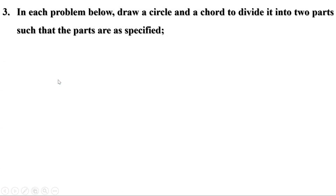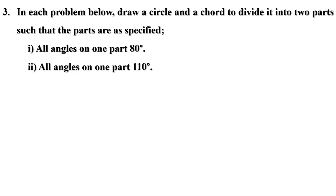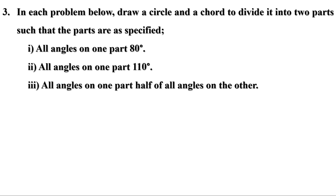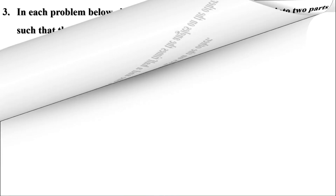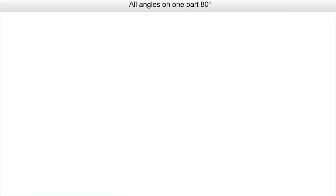In each problem below, draw a circle and a chord to divide it into two parts such that the parts are as specified. First: all angles on one part 80 degrees. Second: all angles on one part 110 degrees. Third: all angles on one part half of all angles on the other. Fourth: all angles on one part one and a half times the angles on the other.